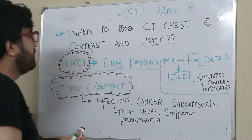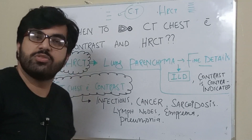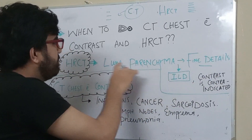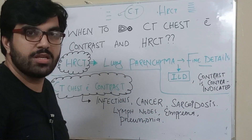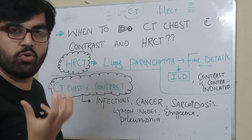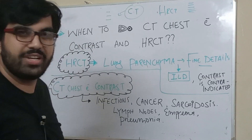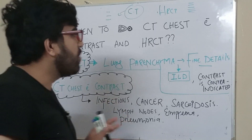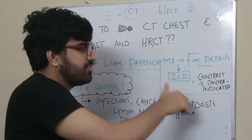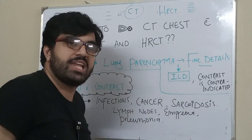The HRCT helps us detect even small lesions. We go for HRCT when we want to see the fine details of the lung parenchyma. We are not interested in seeing the lymph nodes, pleural signs, or blood supply — we are only interested in the fine details of the lung parenchyma, so the answer is HRCT.